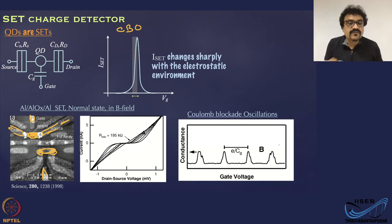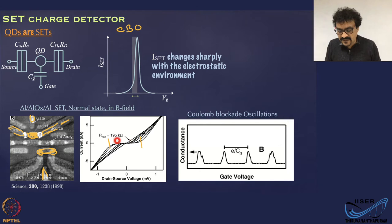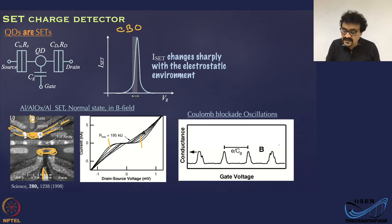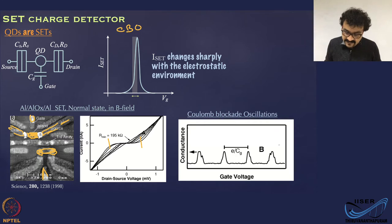The current-voltage characteristics show a blockade which you can lift by applying a gate voltage. These different traces shown here are for different gate voltages. You have a complete blockade in the center region, which you can lift by changing the gate voltage, and you can get nearly ohmic behavior. These are the Coulomb blockade oscillations where gate voltage versus conductance is plotted. This device has a resistance of 195 kilo-ohm in the normal state.